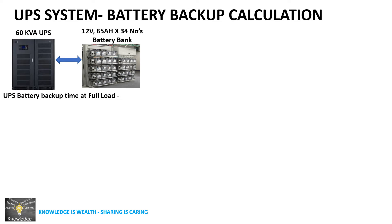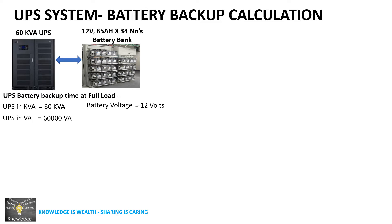Let's calculate the UPS battery backup at full load. The UPS capacity is 60 kVA. In volt-ampere, we multiply by 1,000 — so 60 into 1,000 equals 60,000 volt-ampere. We know each battery voltage is 12 volts, and 34 batteries are connected in series, so the battery bank voltage is 12 × 34 = 408 volts.